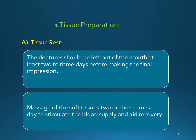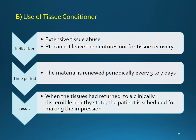Before any relining or rebasing, tissue preparation is done. The denture should be left out of the mouth for two or three days before making the final impression. Massage of the soft tissues two or three times a day helps stimulate blood supply and aid recovery. Tissue conditioners are used when there is extensive tissue abuse or if the patient cannot leave the denture out for tissue recovery.